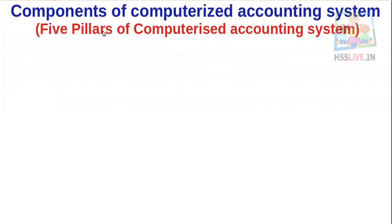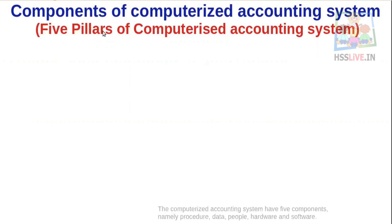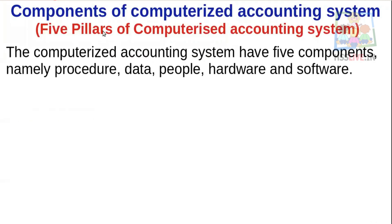The Components of Computerized Accounting System, or the 5 Pillars of Computerized Accounting System: the Computerized Accounting System has 5 components — namely Procedure, Data, People, Hardware, and Software.